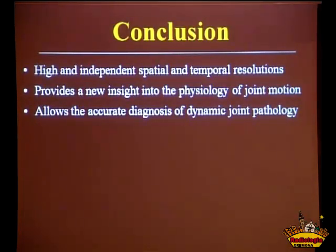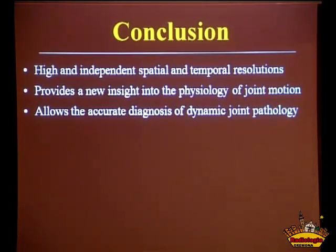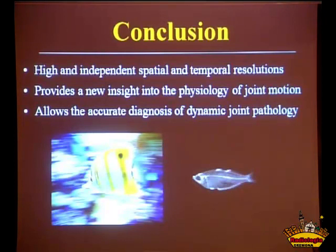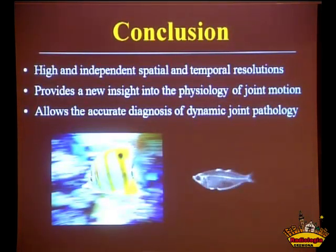In conclusion, CT provides high and independent spatial and temporal resolutions. Coupled with low dose, this yields a new tool to evaluate joint motion, providing new insight into the physiology of joint motion. This technique allows us to accurately diagnose dynamic joint pathology. Before, we were trying to imply motion by looking at static images. Today, we are looking at motion as it happens and can see the pathology going on in the patient in vivo. That clearly increases our diagnostic power.